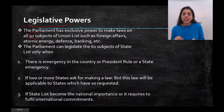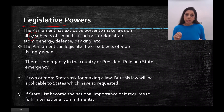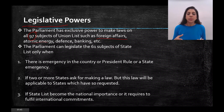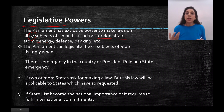There are 97 subjects in the Union List that Parliament handles — foreign affairs, atomic energy, defence, banking, currency, highways, ports, railways — all these are in the hands of the Parliament. They make exclusive laws for these subjects. This is the legislative power in the Union List.